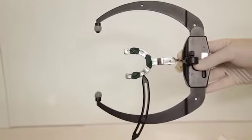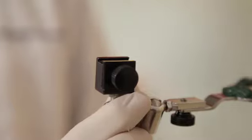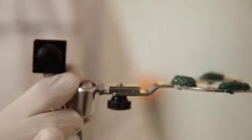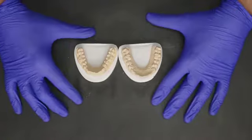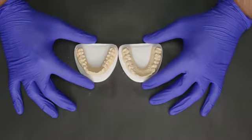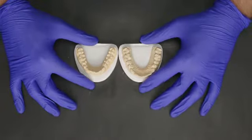After you've sent your face bow transfer to the lab along with the impressions and bite, the models are poured from these impressions using type 4 die stone. The models have already been retrieved from the impression and are now ready to be mounted.